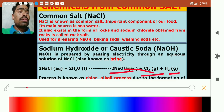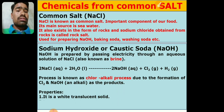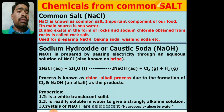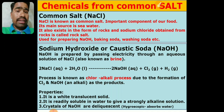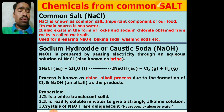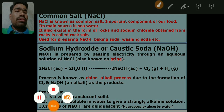Sodium hydroxide is also called caustic soda. It is formed by the chloroalkali process — passing current through brine (aqueous NaCl) produces NaOH, Cl2, and H2. The process is called chloroalkali because both chlorine and alkali (NaOH) are formed. NaOH is a white translucent solid, readily soluble in water to give a strongly alkaline solution. Crystals of NaOH are deliquescent — they absorb moisture from air easily.